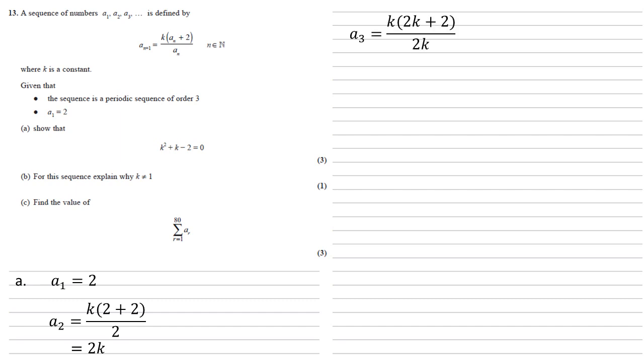We can now find A3 by putting this 2K into the formula in place of A n. So we get K times 2K plus 2 all over 2K. We can see there's K top and bottom of that fraction. They'll cancel out and the 2 on the bottom will cancel out with the two 2s on the top, leaving us with K plus 1.